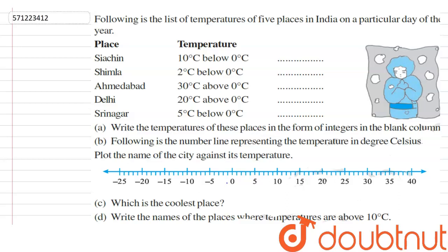The question is: the following is a list of temperatures of five places in India on a particular day of the year. The temperatures of five different places are given. In Siachen the temperature is 10 degrees Celsius below zero, in Shimla it is 2 degrees Celsius below zero, in Ahmedabad it is 30 degrees above zero, in Delhi it is 20 degrees Celsius above zero, and in Srinagar it is 5 degrees Celsius below zero.